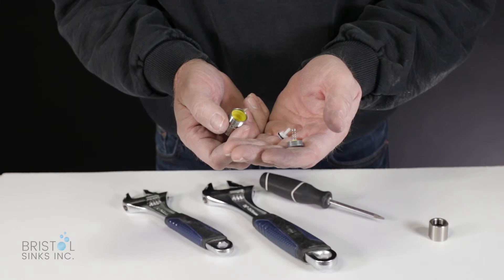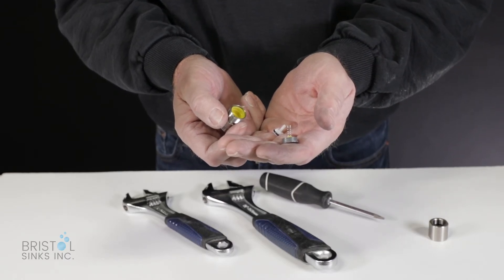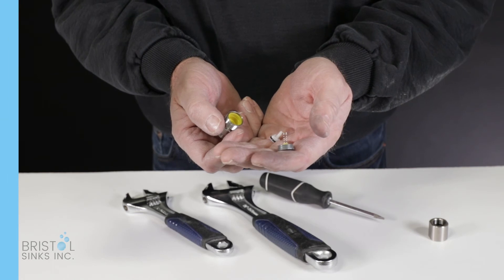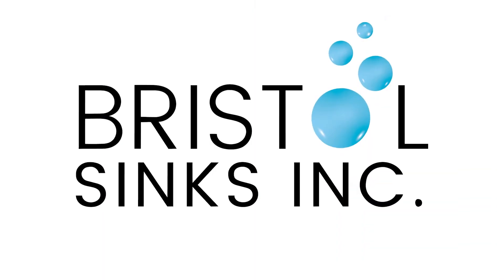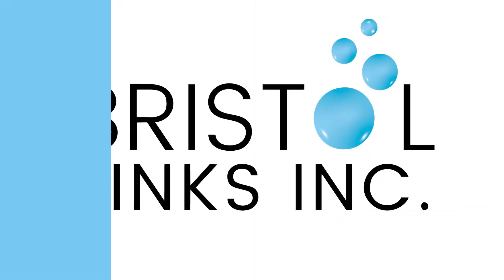Rinse these thoroughly with water and put them back together, then hook them back up to the faucet. This should solve the problem with the low pressure.